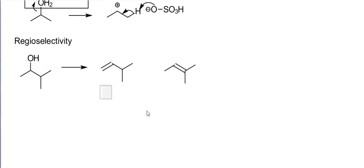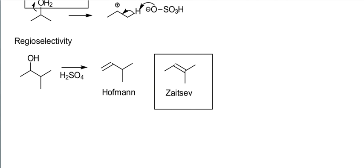Sometimes two. Unfrequently three. You know, we can have the Hoffman elimination product, less substituted, or the Zaitsev elimination product, more substituted. And the elimination of dehydration of alcohols are almost exclusively going to form the Zaitsev. The Zaitsev product is going to be preferred.